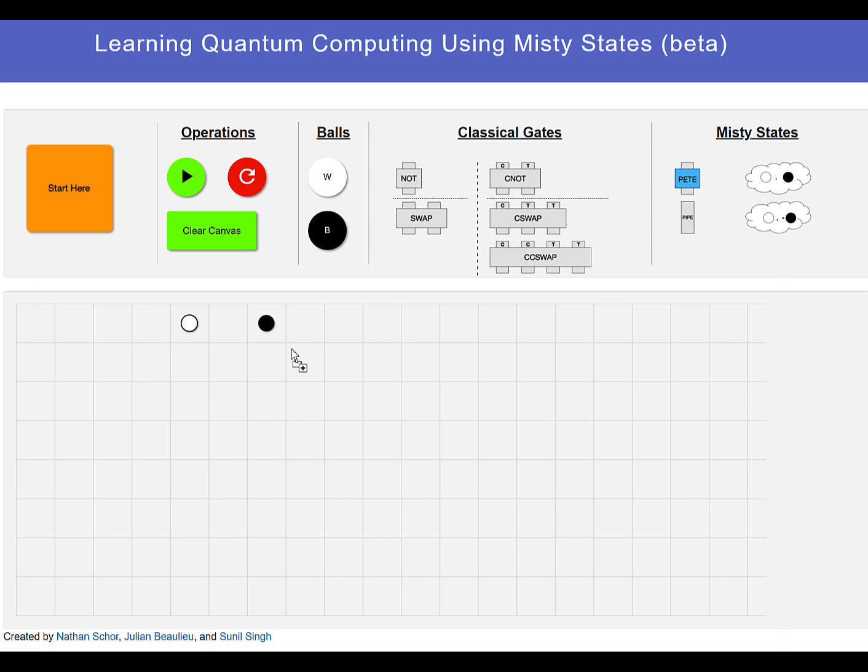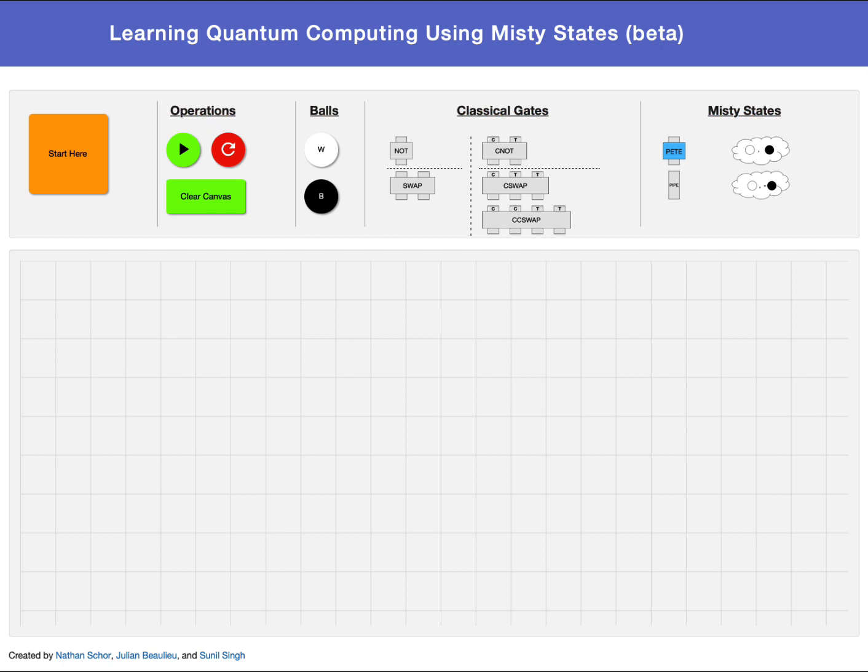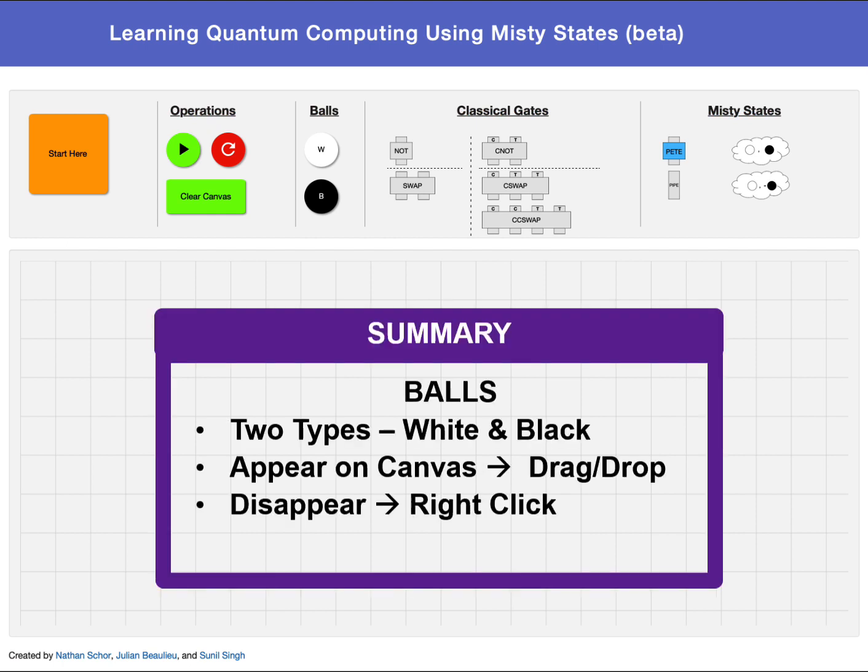Also note, as expected, once a square is occupied, no other object will be placed into or on top of an already occupied square. Okay, that's all there is about balls. There are two types, white and black. They appear on the canvas by dragging and dropping, and they disappear by right clicking.